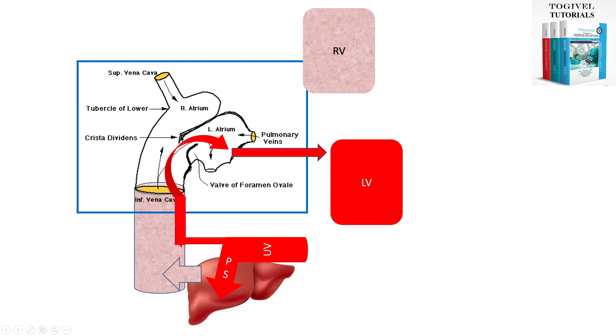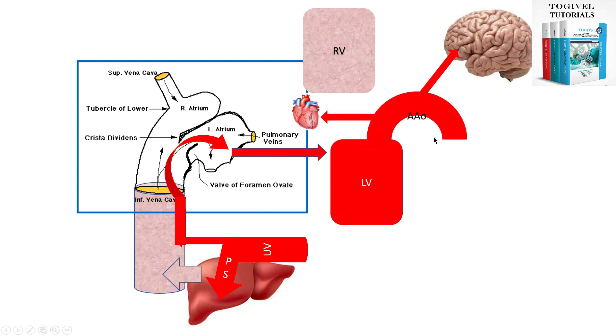The highly oxygenated blood of ductus venosus is shunted from foramen ovale to the left atrium by preferential flow of crista dividens. This blood is then pumped from the left ventricle to the ascending aorta and supplies the heart and brain, and thus ensures that the brain and heart receive well oxygenated blood.